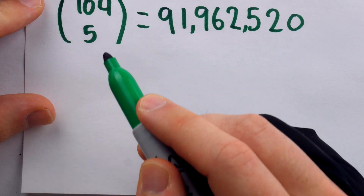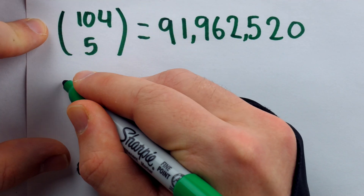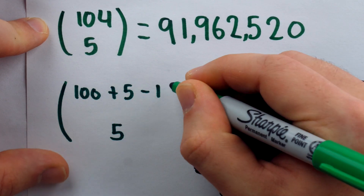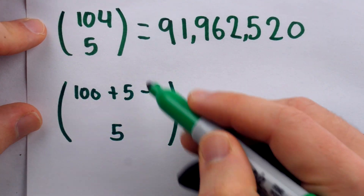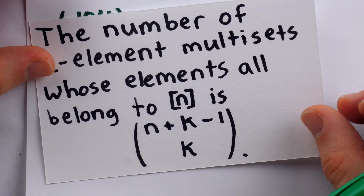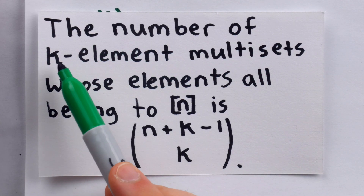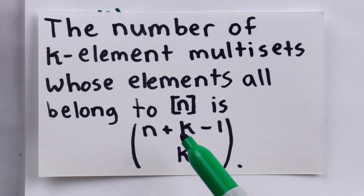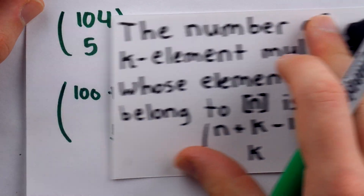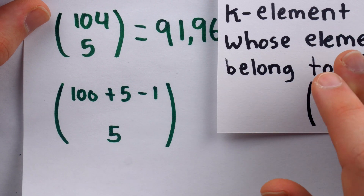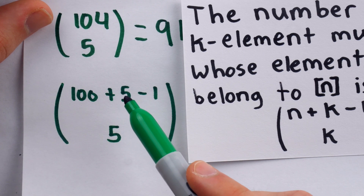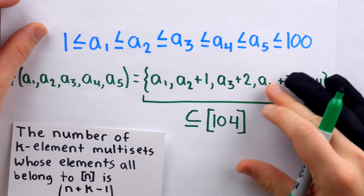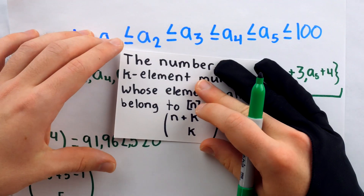It's important that we connect this to the general identity at play here. Notice that 104 choose 5 looks a lot like 100 + 5 − 1 choose 5, and in fact this accurately mirrors the relevant identity. The theorem is: the number of k-element multisets whose elements all belong to the set of natural numbers from 1 through n is n + k − 1 choose k — just like what we saw with 100 + 5 − 1 choose 5, where n = 100 and k = 5.